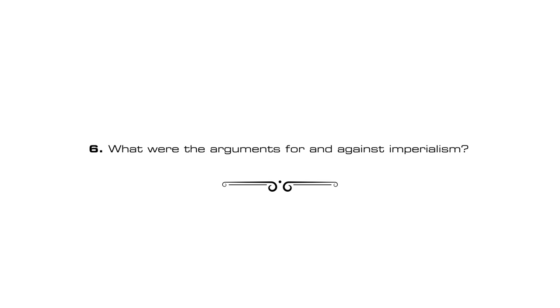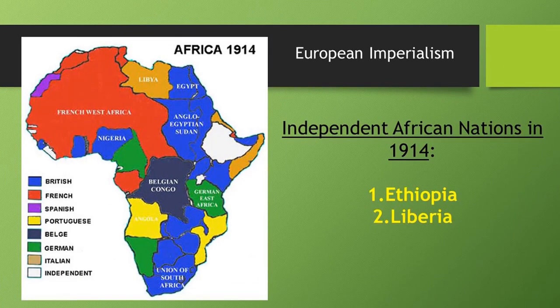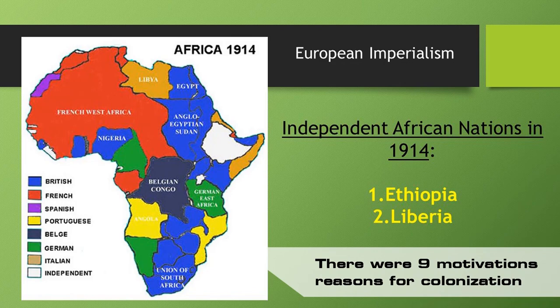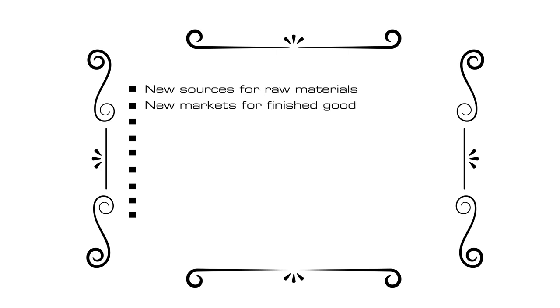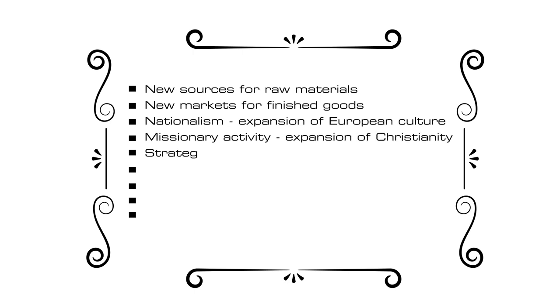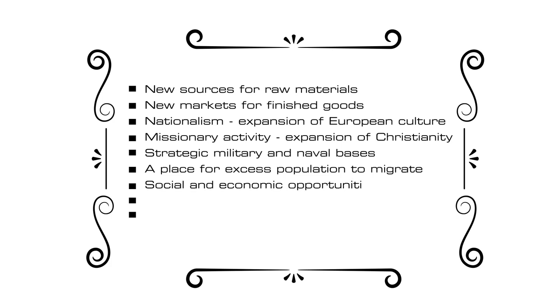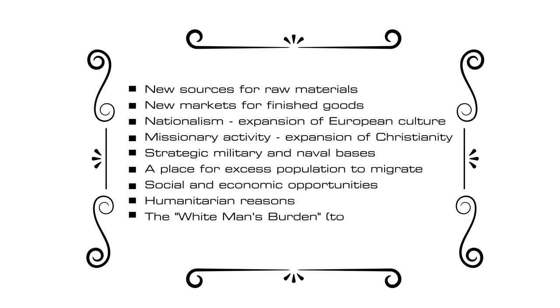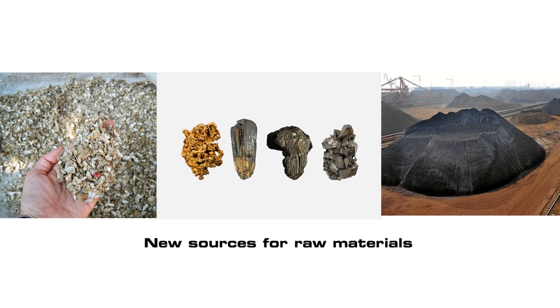What were the arguments for and against imperialism? Let's take a look at the scramble for Africa. Looking at imperialism in Africa, we can identify nine major motivations or reasons for colonization: new sources for raw materials, new markets for finished goods, nationalism or the expansion of European culture, missionary activity or the expansion of Christianity, strategic military and naval bases, a place for excess population to migrate, social and economic opportunities, humanitarian reasons, and the white man's burden — today regarded as thinly veiled racism.